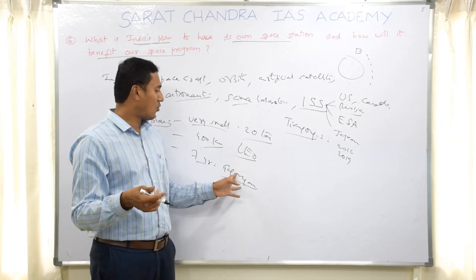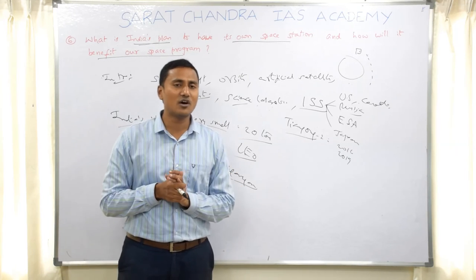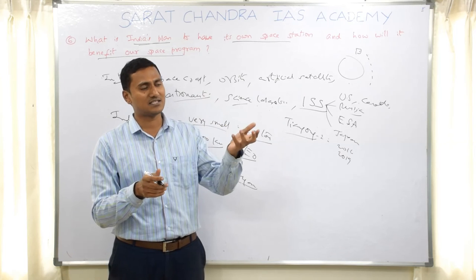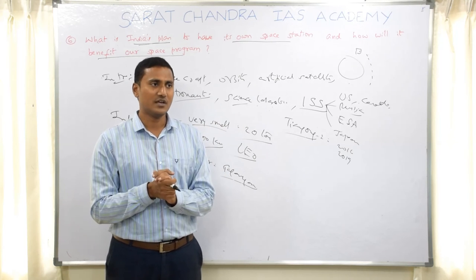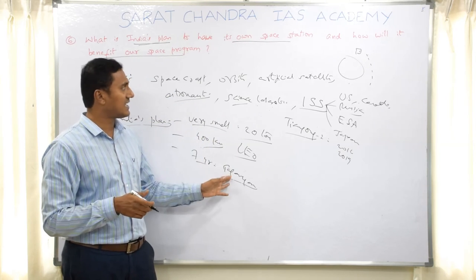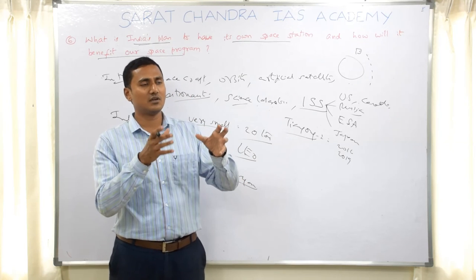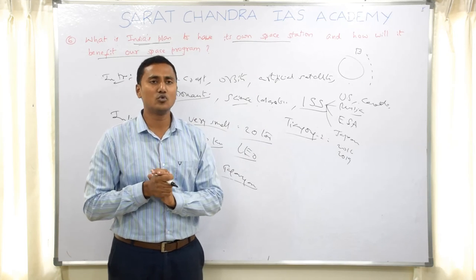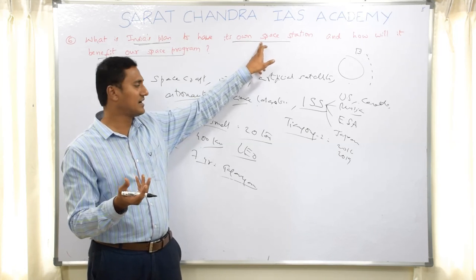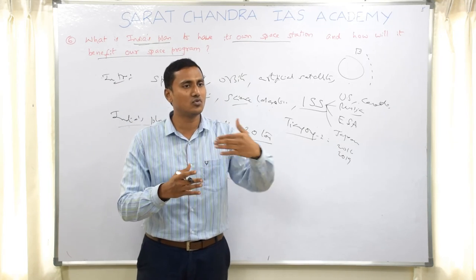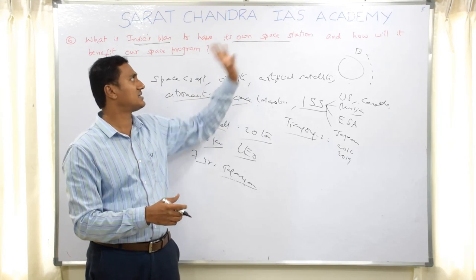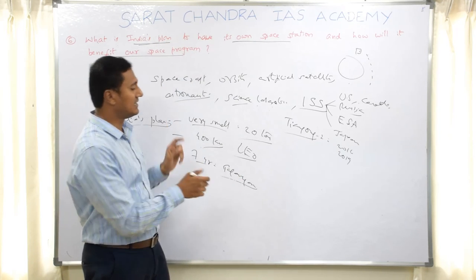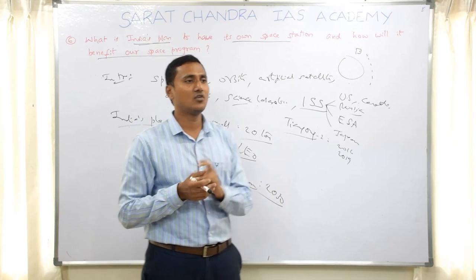The reason for linking the space station with Gaganyaan is that Gaganyaan is a human space flight program — India wants to send three astronauts into space. The natural extension of a manned space mission is a space station. Since Gaganyaan builds the capability for manned space missions, the space station follows. India's plan is to launch the space station by around 2030. For the benefits to India's space program, one key benefit is commercialization — generating revenue from the space program. As with GSLV and PSLV, which have launched satellites of many other countries and earned significant revenue, a space station would further enhance this capability.